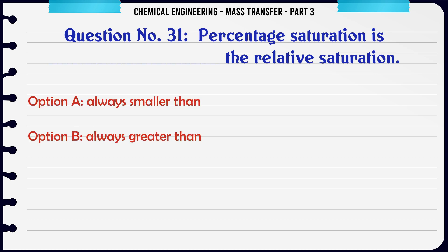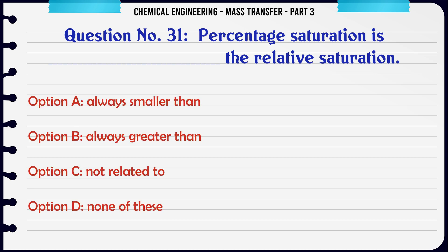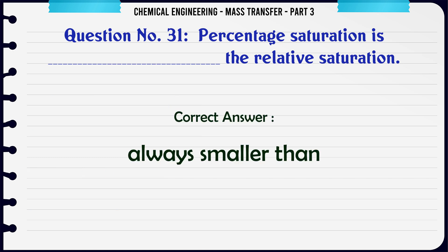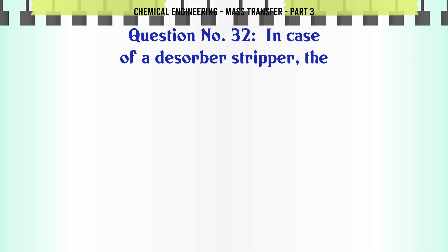Percentage saturation is the relative saturation: A) always smaller than, B) always greater than, C) not related to, D) none of these. The correct answer is: always smaller than. In the case of a desorber/stripper: